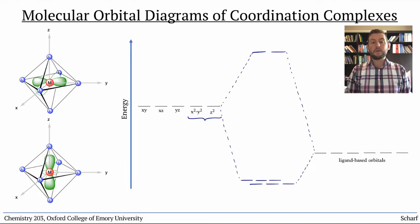For reasons that we won't worry about, it so happens that both of the d orbitals go up by exactly the same energy. They're degenerate. The remaining three d orbitals, those that didn't overlap with the ligand orbitals, remain non-bonding.